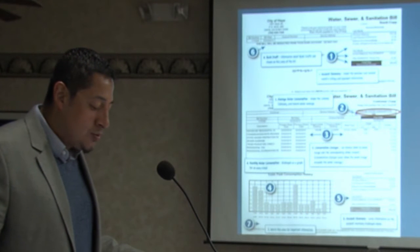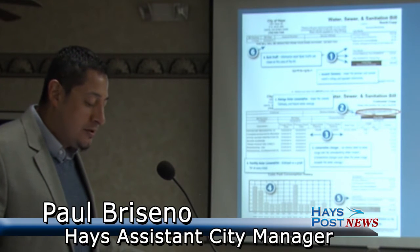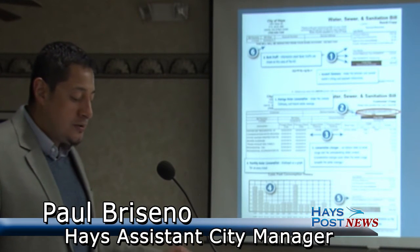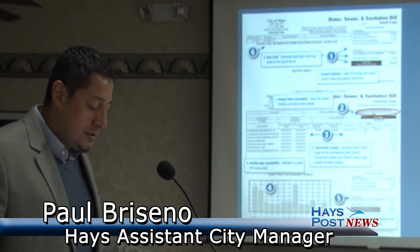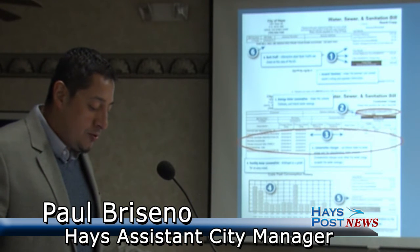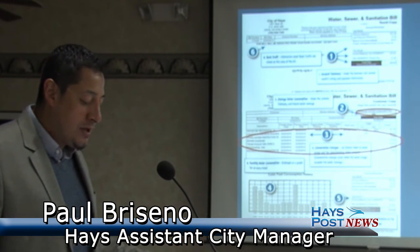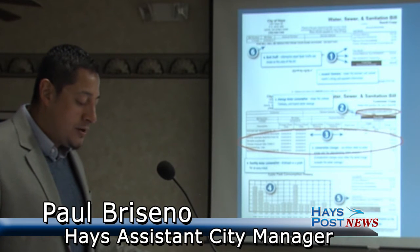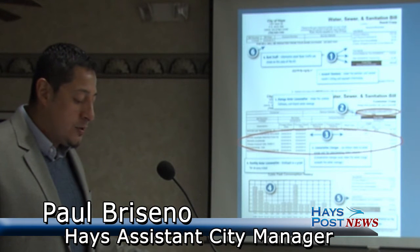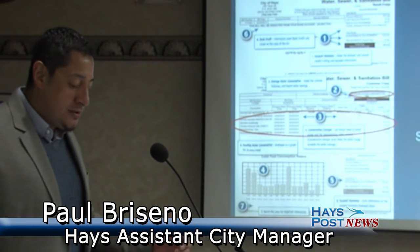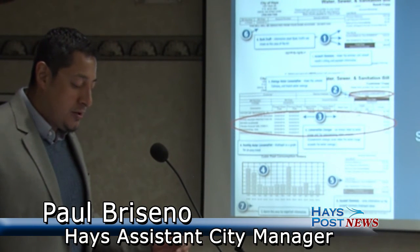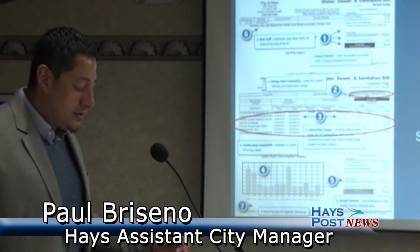Item number two shows the average water consumption for January, February, and March, which is generally their indoor usage. Area number three notes conservation charges broken down by water usage and the corresponding dollar amount. Conservation charges occur when the water usage is exceeded — when they exceed their indoor use.